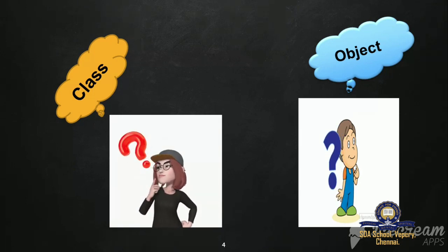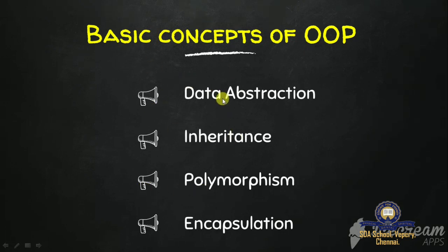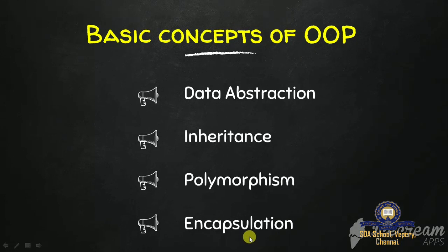Now let's enter into the new topic. In this lesson, the next two topics are: basic concepts of object oriented programming language. There are four basic concepts: first is data abstraction, next is inheritance, next is polymorphism, and last is encapsulation. Now we will see each briefly one by one.